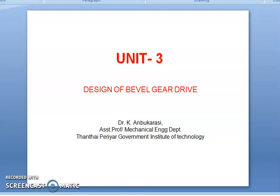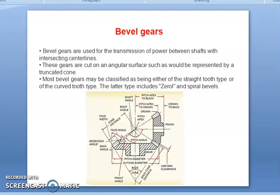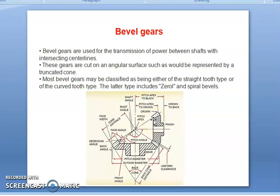The bevel gear drives are used to transmit power between the intersecting shafts. In bevel gears, teeth are cut on conical surfaces, in contrast with spur and helical gears for which the teeth are cut on cylindrical surfaces. Here the teeth are cut on conical surfaces and are tapered in both the tooth thickness direction as well as the tooth height direction.